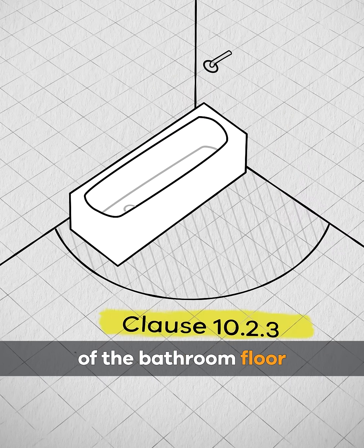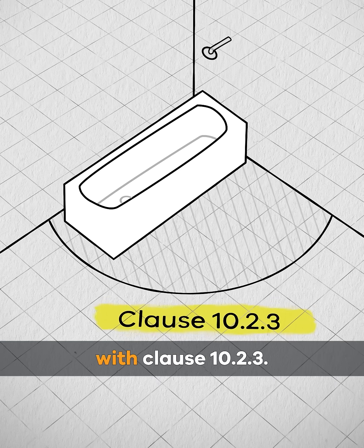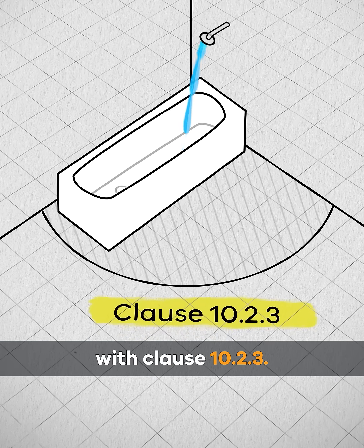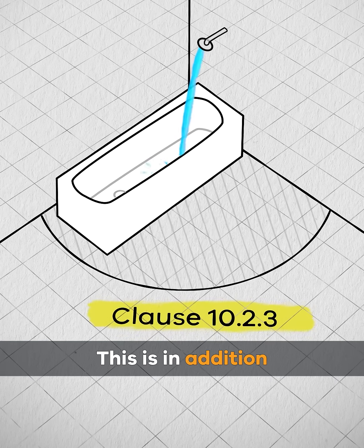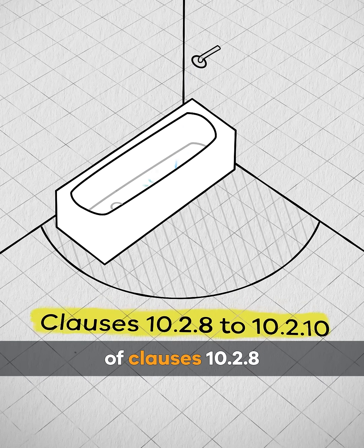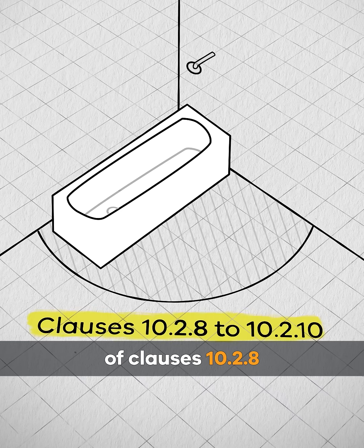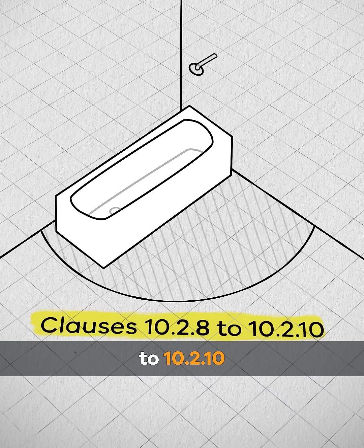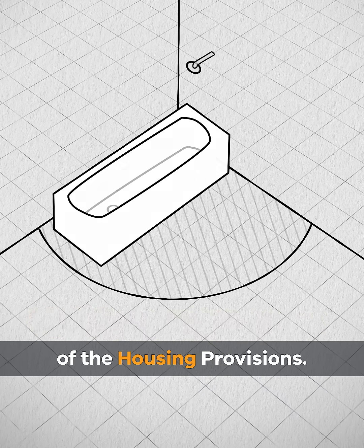The remainder of the bathroom floor must still comply with Clause 10.2.3. This is in addition to the material requirements of Clauses 10.2.8 to 10.2.10 of the housing provisions.